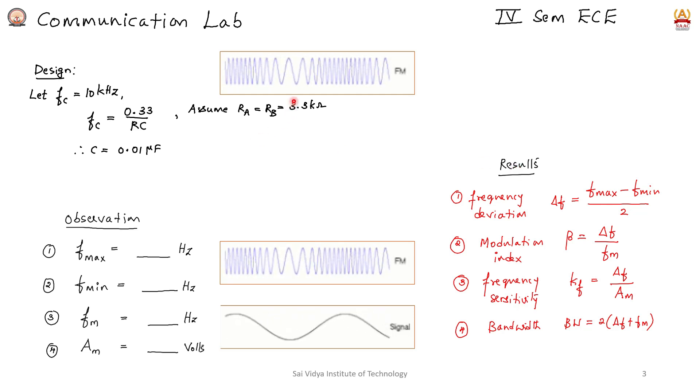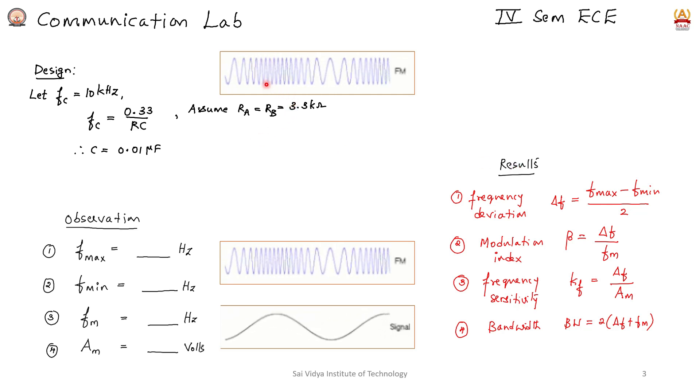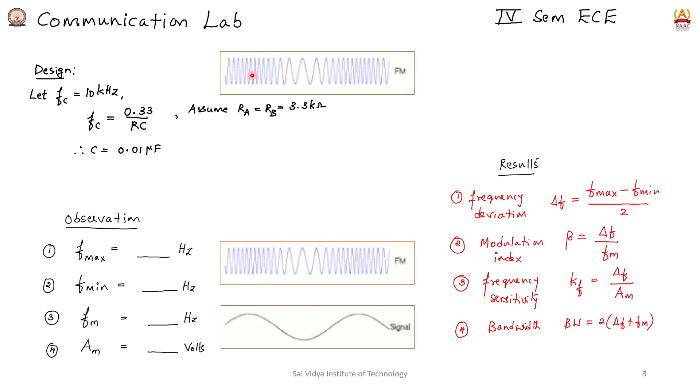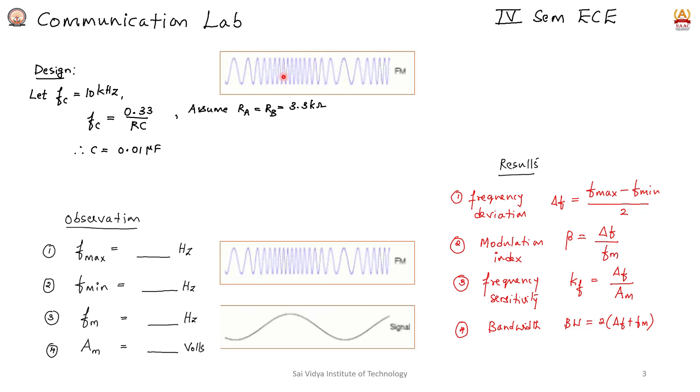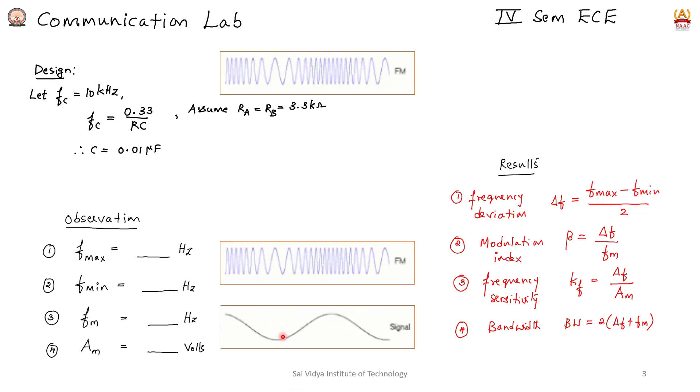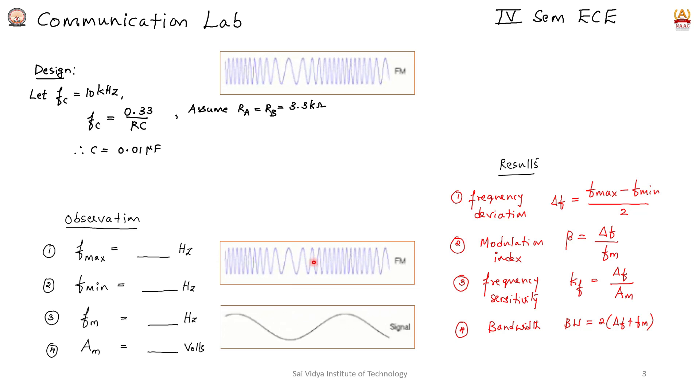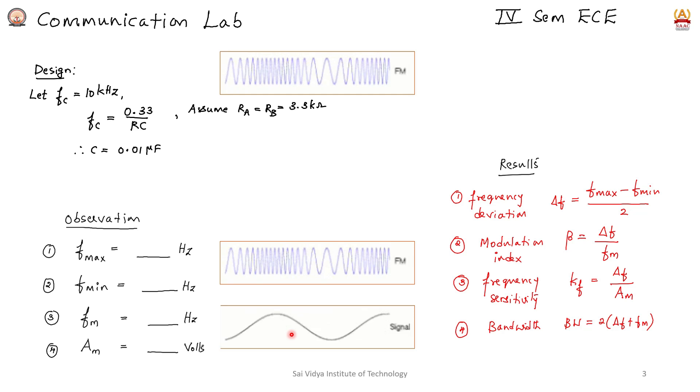FM is a technique where the frequency of the carrier is varied in accordance with the message signal. The carrier frequency changes in accordance with the message signal amplitude.